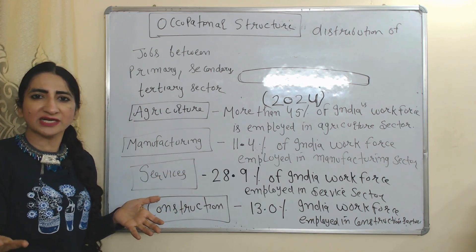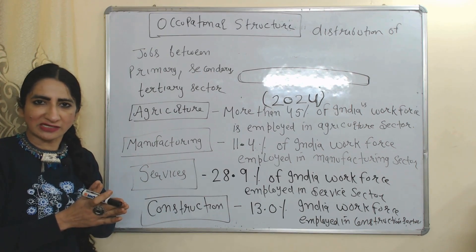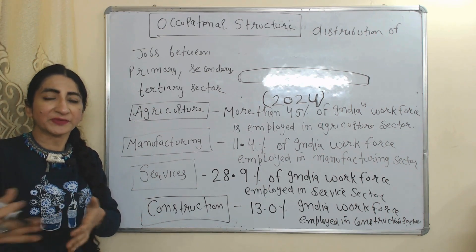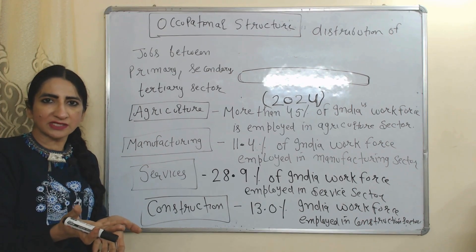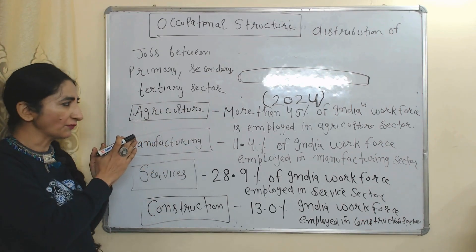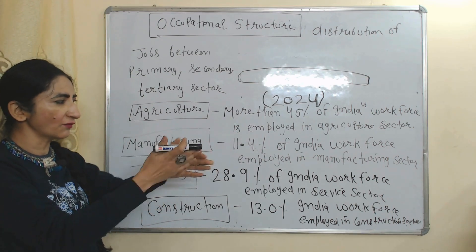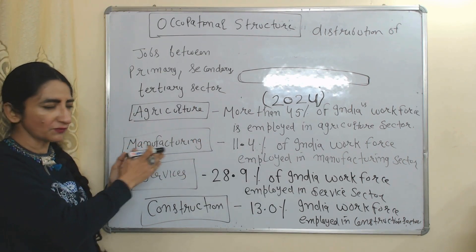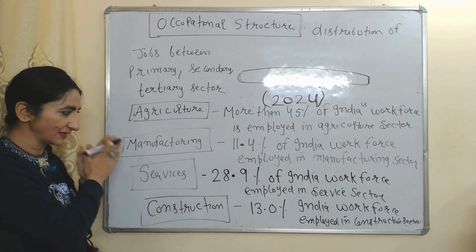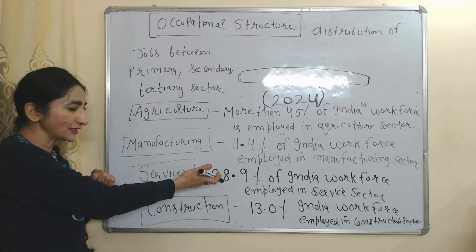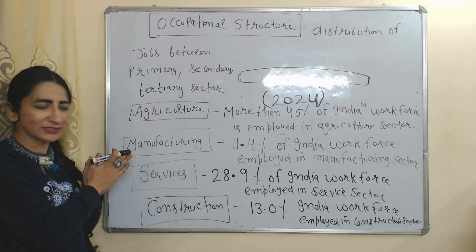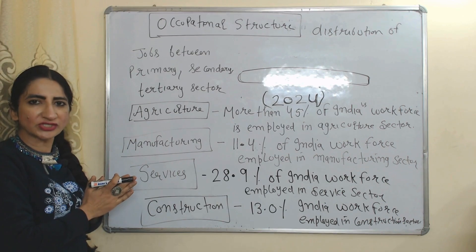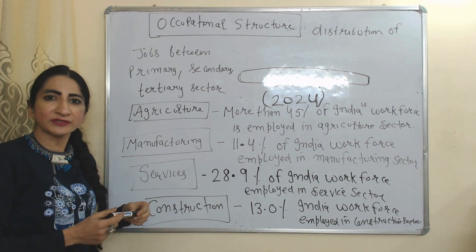The next feature is occupational structure, which means the division of jobs between different sectors: primary, secondary, and tertiary. The primary sector means agriculture, the secondary sector means manufacturing and construction, and the tertiary sector means services. As of 2024, more than 45% of India's workforce is employed in agriculture, 11.4% in manufacturing, 28.9% in services, and 13% in construction.